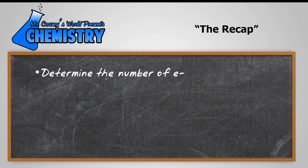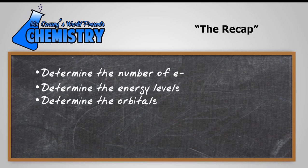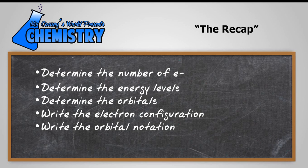I'll recap. Determine the number of electrons. Determine the energy levels and that all comes from the periodic table. Then determine the orbitals. Write the electron configuration. Write the orbital notation. And be sure to use your periodic table.